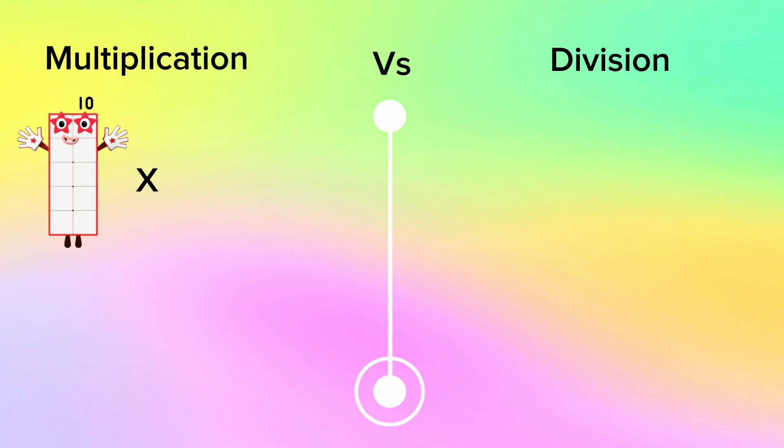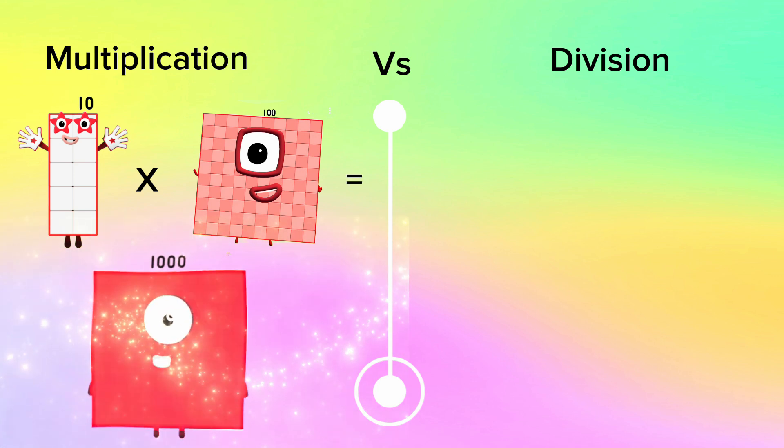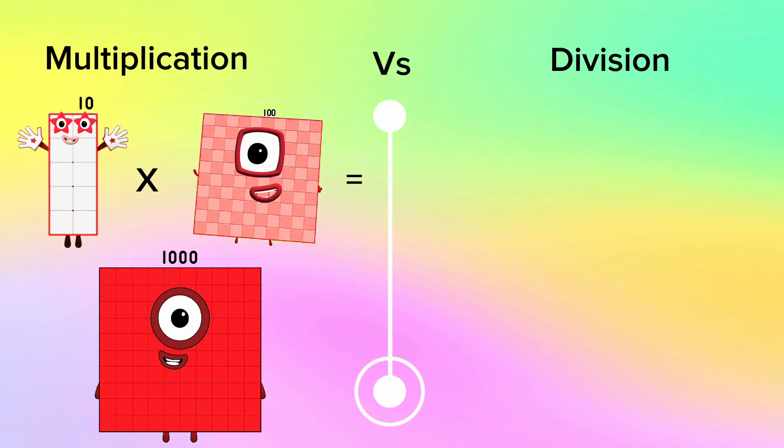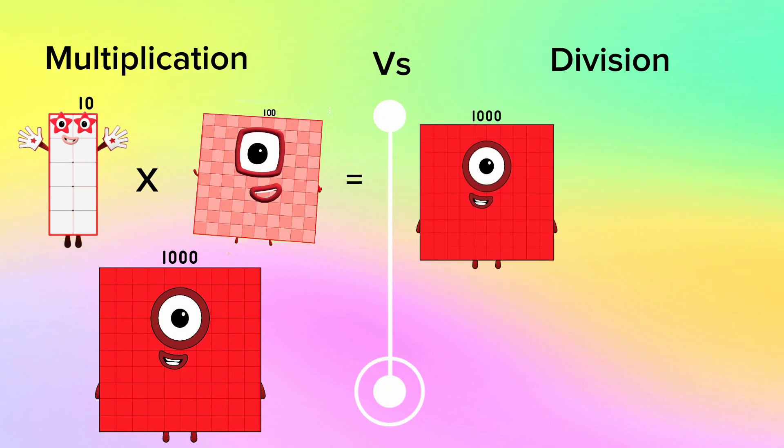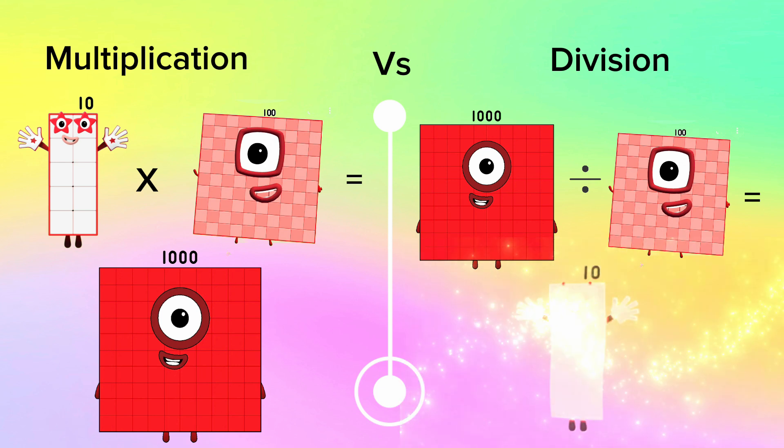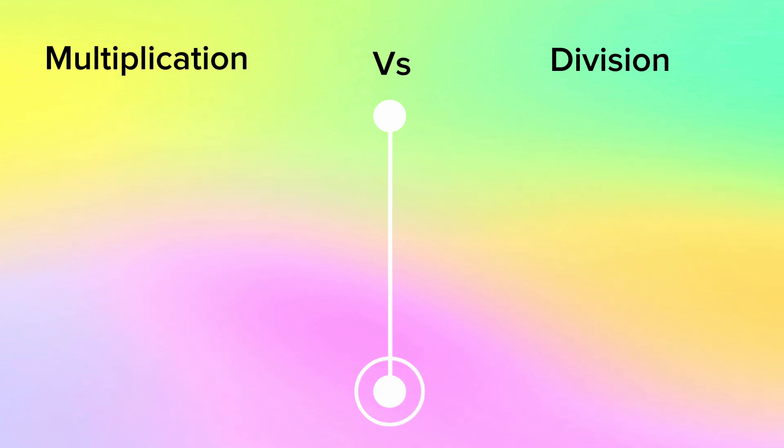10 multiplied by 100 is equals to 1,000. Let's compare it with division. 1,000 divided by 100 is equals to 10. Next,